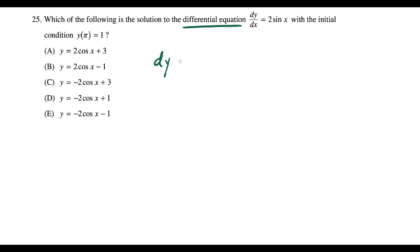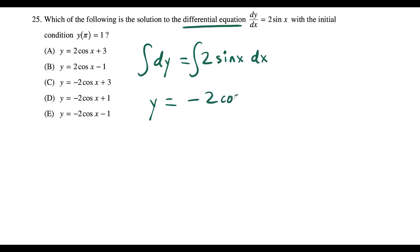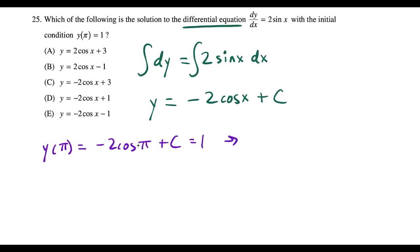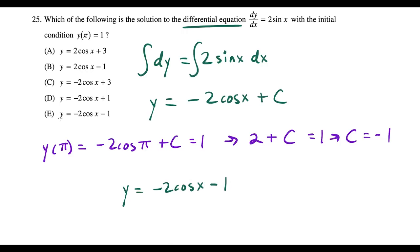Question twenty-five: solve the differential equation dy/dx = 2 sin(x) with y(π) = 1. Separating variables: dy = 2 sin(x) dx. Integrating both sides: y = −2 cos(x) + C. Plugging in the initial condition: 1 = −2 cos(π) + C = 2 + C, so C = −1. The solution is y = −2 cos(x) − 1, matching choice E.